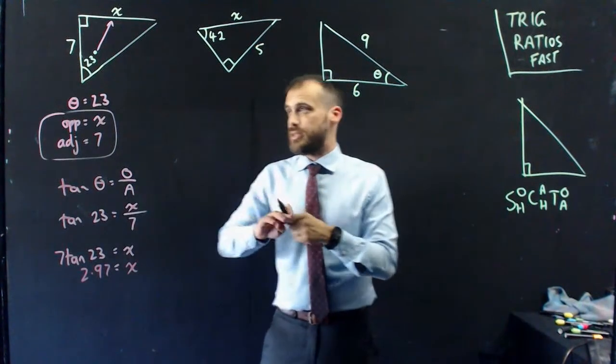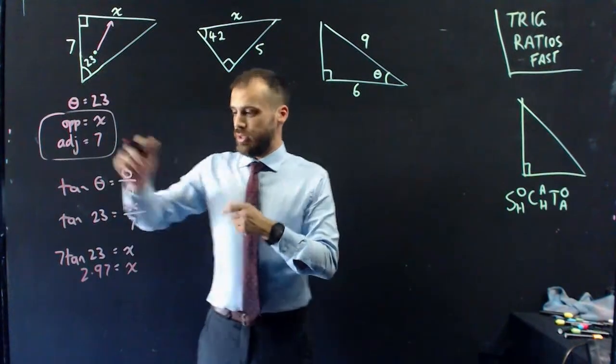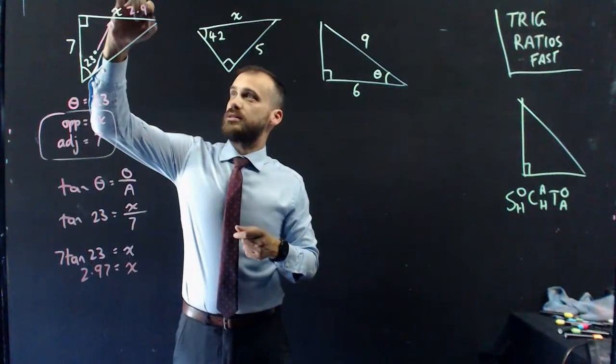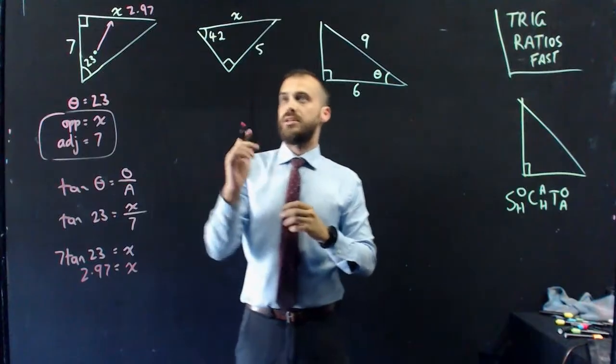Stop and think for a minute. Does that make sense? 23, that's actually a much smaller angle than how I've drawn it. Does 2.97 make sense there, if that angle looked more like 23 degrees? Yeah, I think it does. Good. Finished. Next.